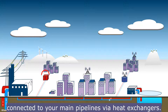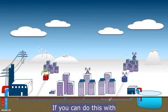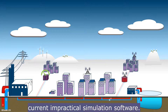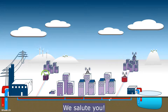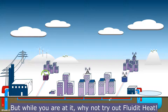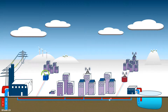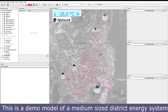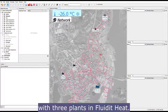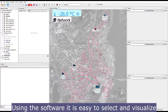Installing new meters, planning data points, and managing separate low-temperature networks connected to main pipelines via heat exchangers all add complexity. If you can do this with your current impractical simulation software, we salute you — but why not try Fluidity Heat? This is a demo model of a medium-sized district energy system with three plants in Fluidity Heat.